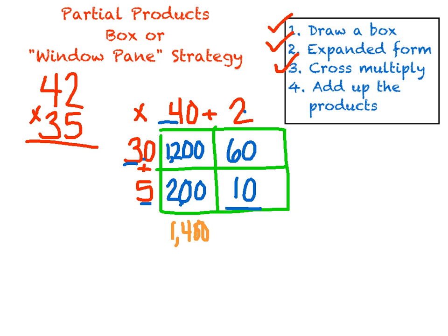I have 1,200 plus 200 would be 1,400. Okay, then I have 60 plus 10, that's 70. Now I just add 1,400 plus 70, and that is 1,470.